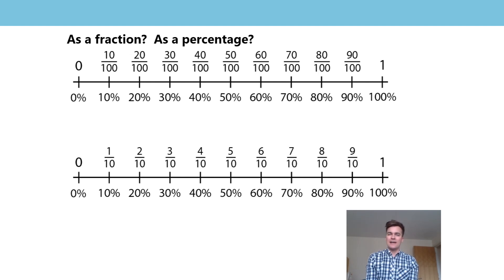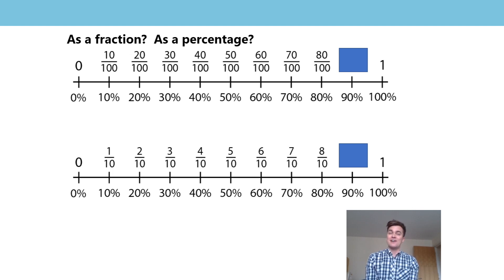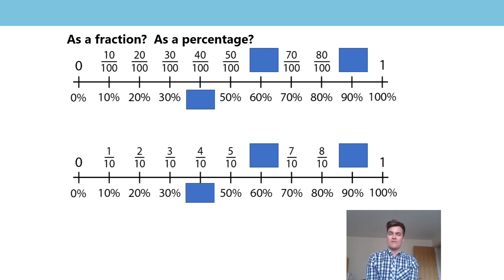Next, I'm going to hide either some percentages or fractions, and I want you to tell me the equivalent. Here I've hidden the fractions — I've left you with ninety percent. Can you tell me what that is equal to as a fraction? Tell me another fraction too. Good: we could say ninety hundredths, or nine tenths from the options on the number lines. Next one — quickly, tell me the percentage that's missing: forty percent. Good. Tell me the tenths equivalent to sixty percent, and the hundredths. Six tenths, sixty hundredths.